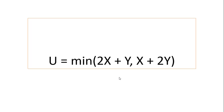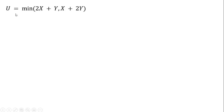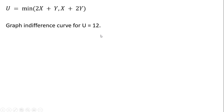We're going to examine this utility function that has elements of perfect substitutes and perfect complements. Given this utility function, let's go ahead and graph the indifference curve for utility equals 12. We're going to find all combinations of x and y that, when plugged into this utility function, will give the consumer 12 units of utility.